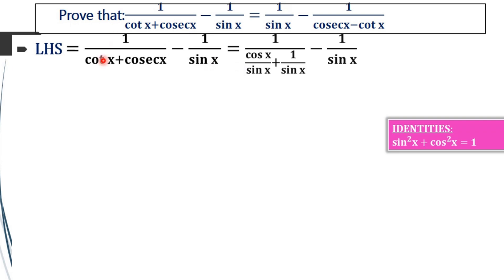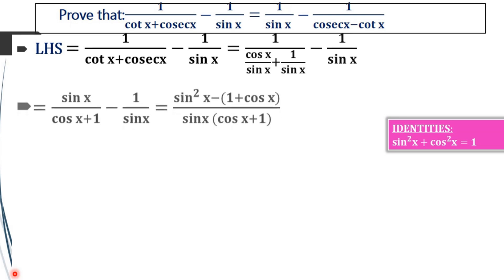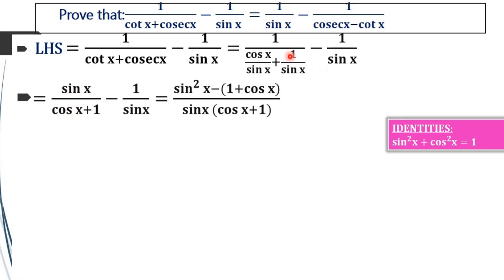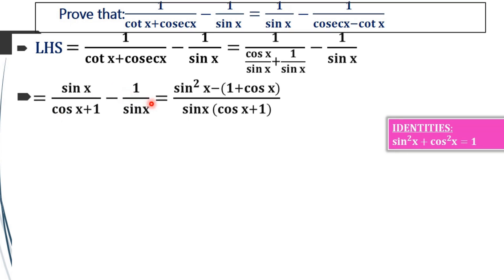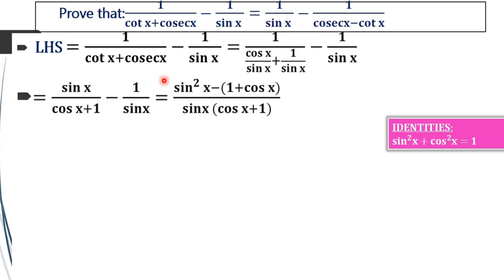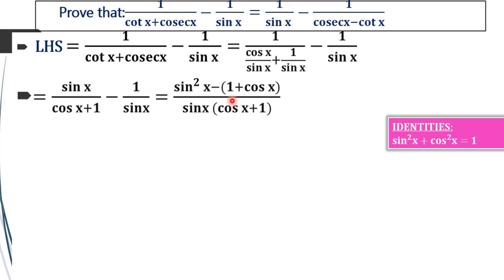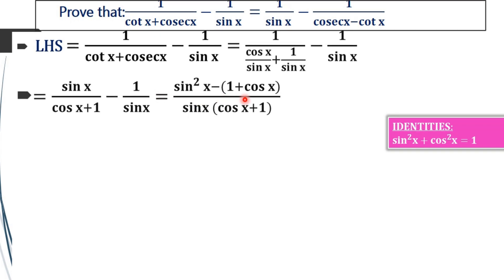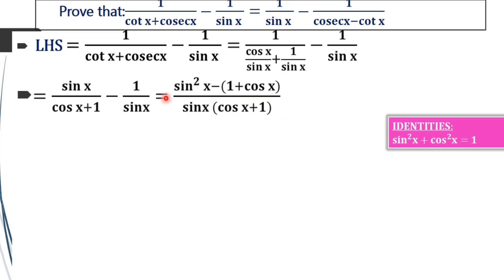In order to simplify this, we will change cotx as cosecx by sinx and cosecx as 1 by sinx in the first step. By taking LCM that is sinx, we will get sinx by cosecx plus 1, that is cosecx plus 1, divided by sinx, and that sinx will move into the numerator — since 1 by 1 by a equals a — minus 1 by sinx. Now by cross multiplying, we get sin squared x minus 1 plus cosx, multiplying sinx and cosx plus 1 into 1, giving sin squared x minus 1 plus cosx, whole divided by sinx into cosx plus 1.